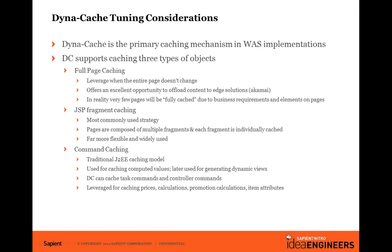Dynacache supports three types of caching. The first is full-page caching. Many websites have homepages, category pages — like electronics, baby, women, men — and product detail pages. If I search for iPhone, a page about entirely iPhone shows up. These pages don't differ much from user to user; they have a few dynamic components but are largely static. You should cache all these pages in Dynacache, and you can also offload that content to edge solutions like Akamai.